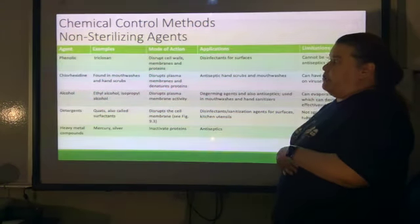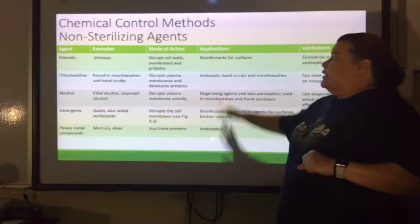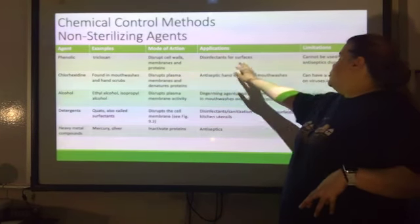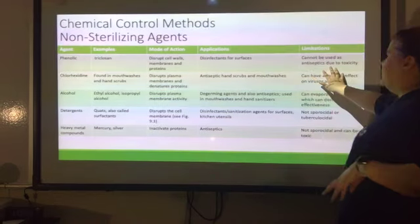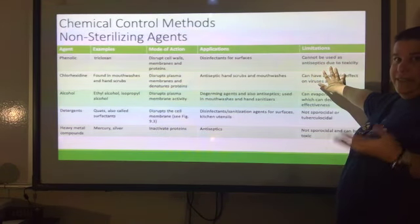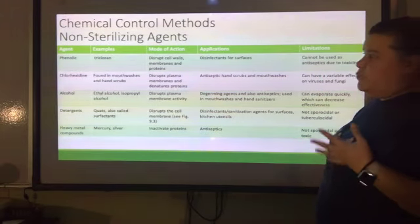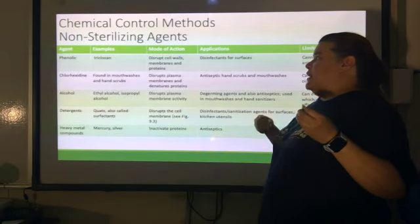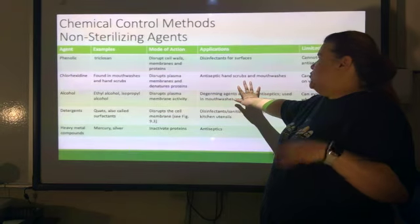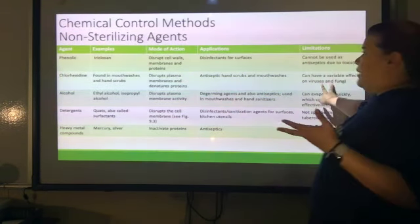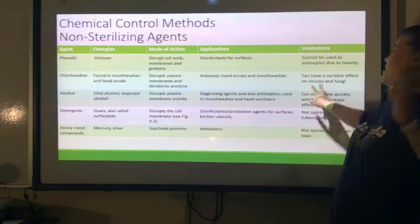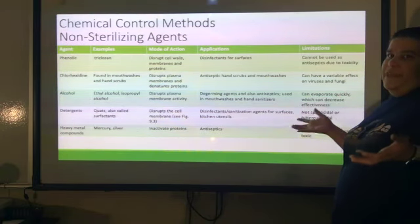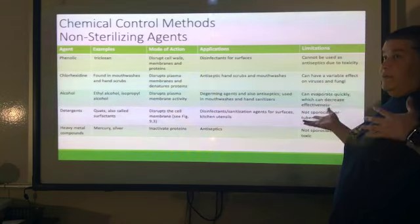Phenolics — for example, triclosan — disrupt cell walls, cell membranes, and proteins. It's a good disinfectant for surfaces, but it can't be used as an antiseptic because it is toxic. Chlorhexidine, found in mouthwashes and hand scrubs, disrupts the plasma membranes and denatures proteins. While it's good with microbes, its effectiveness against viruses and fungi is variable — it depends on which virus or fungus you're dealing with.